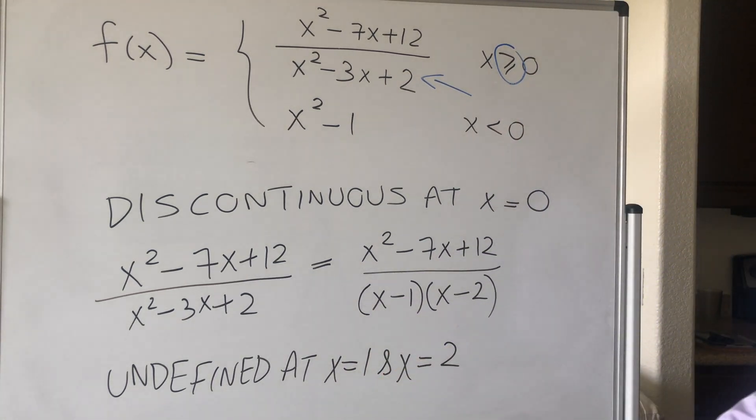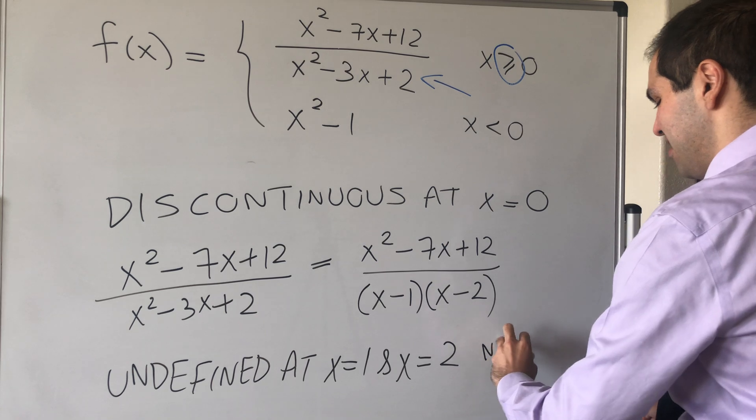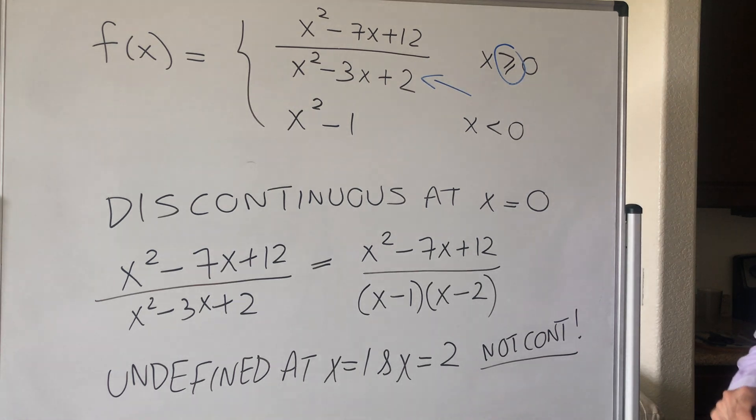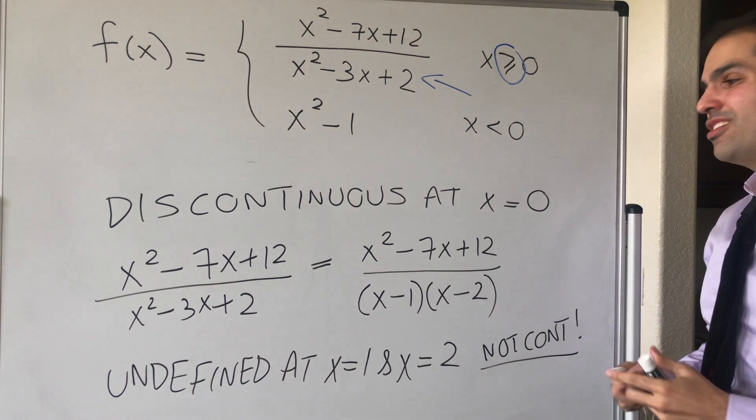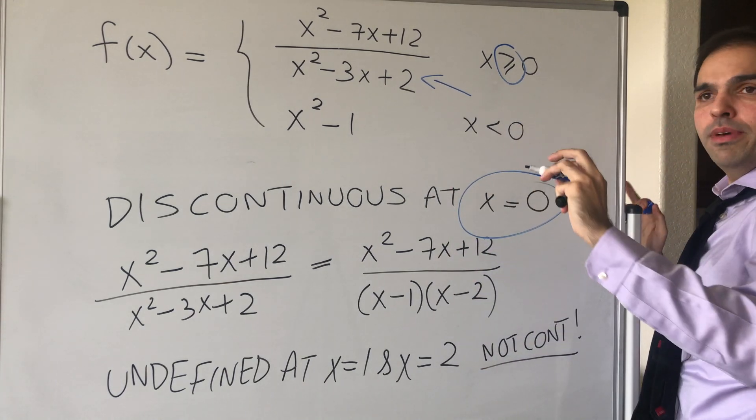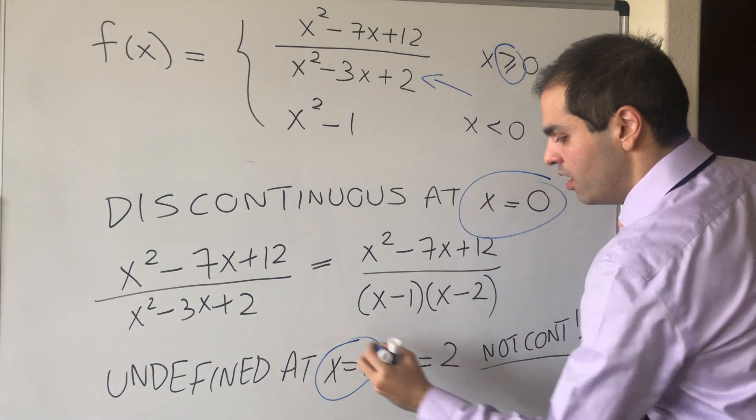So in particular, it is not continuous there. And therefore, we do have three points where it's not continuous: at 0, because the limits are not the same, at 1 and at 2.